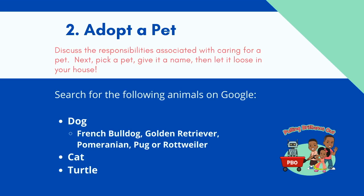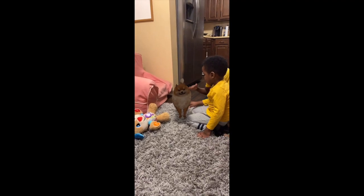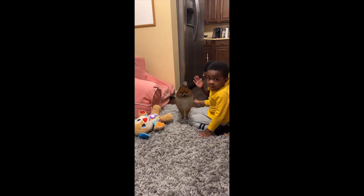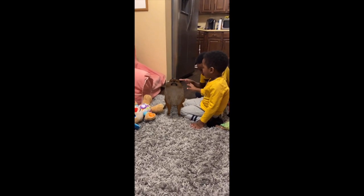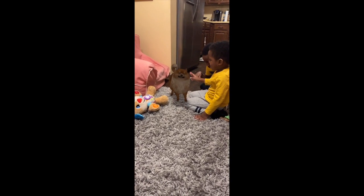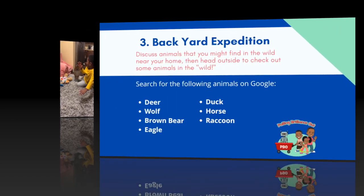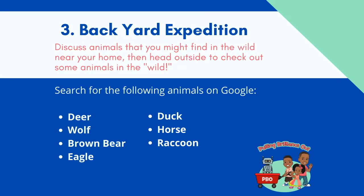Next, you can try adopting a pet. Discuss the responsibilities associated with caring for a pet, pick out a name for your pet, and then let it loose in your house. You can choose some of the traditional animals like a dog, cat, or turtle. Here's a list of all the ones offered through the Google Animals feature. We selected a little Pomeranian and thought about naming her Rona.